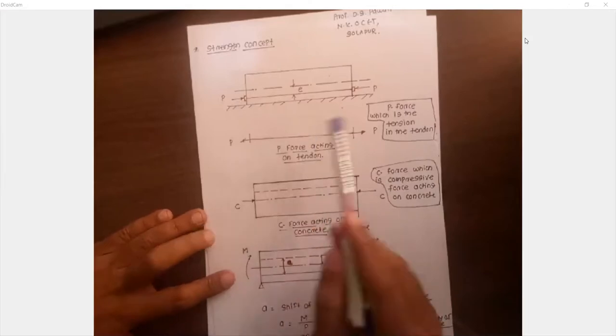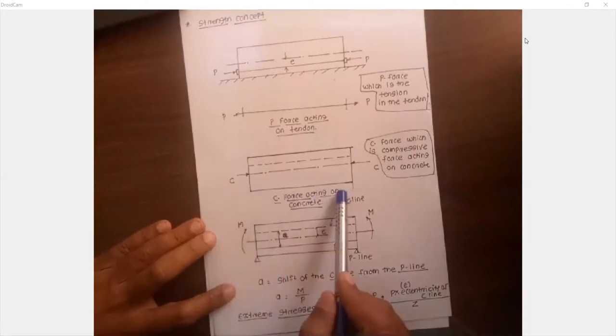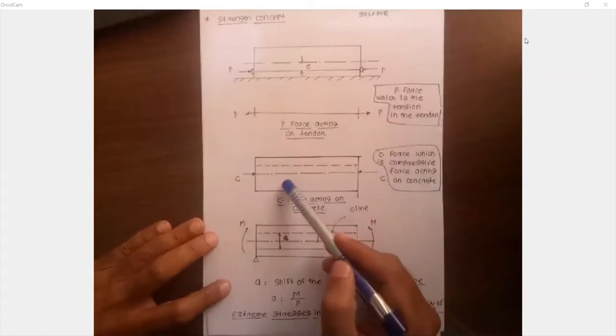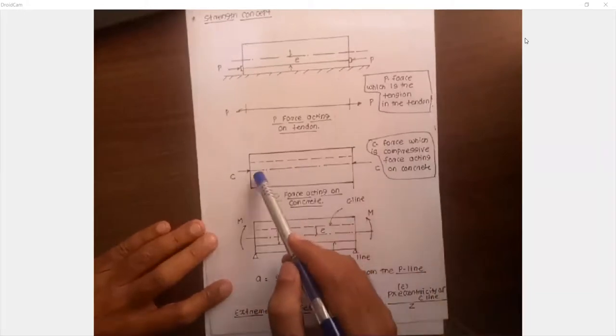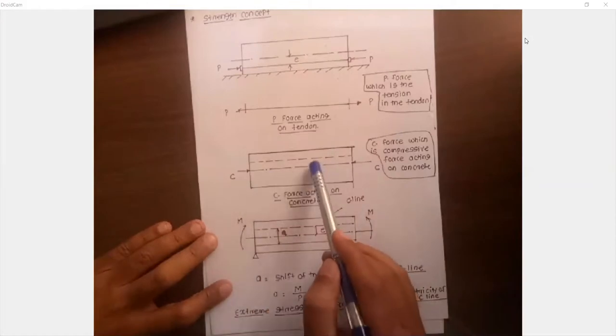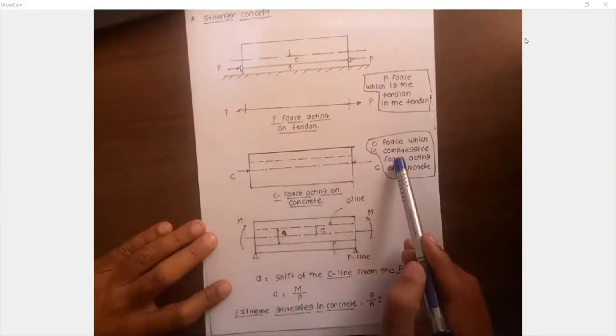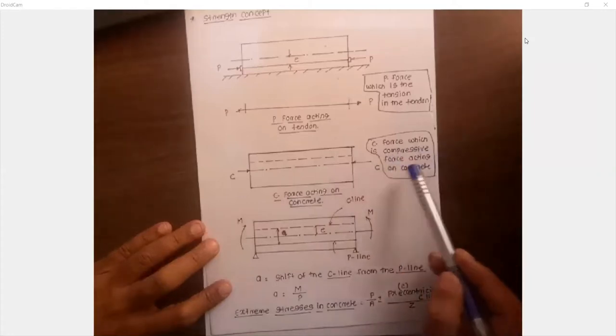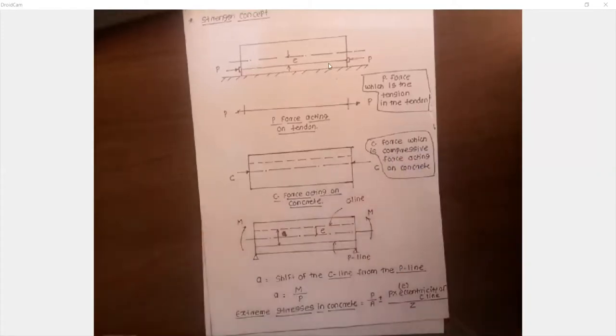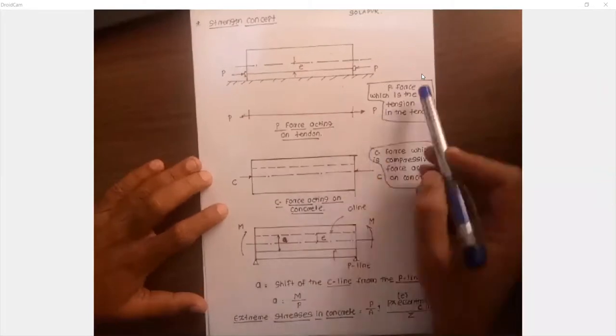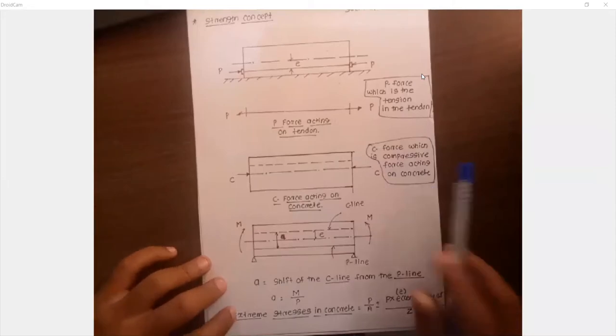In case three, when the beam is not on the ground and you apply an external load, stresses develop in the concrete. The line of stresses in the concrete we call the C force — the compressive force acting on the concrete. So from last lecture: P line is the P force which is the tension in the tendon, and C line is the compression force acting on the concrete.